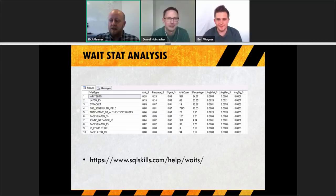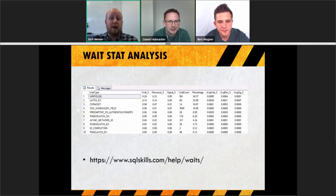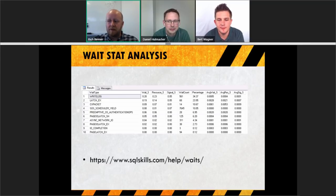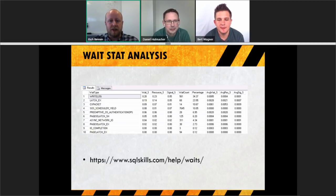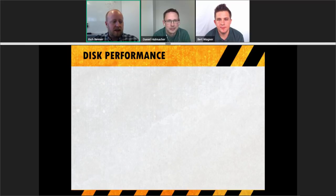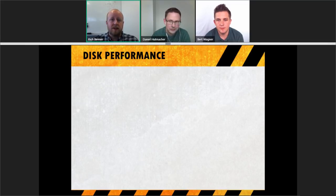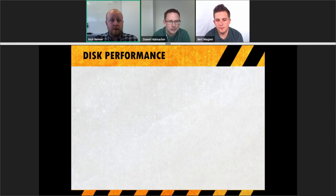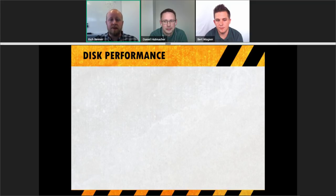sqlskills.com is an excellent resource for understanding wait types until you get a handle on them. Half of them you'll recognize over time; for the ones you don't — like preemptive OS authentication waits — go to that web address and look them up. If wait stats don't identify the fix, you probably want to start looking at disk performance, or the sp_BlitzFirst script may flag network IO wait weights.